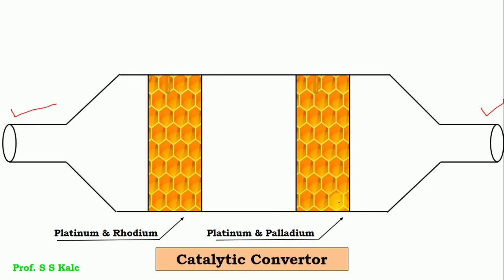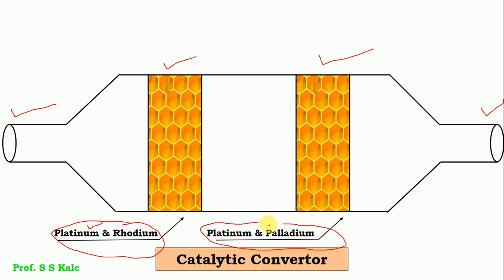Inside the pipeline there are two ceramic blocks, shown in yellow. Both have a honeycomb structure. In ceramic block number one, platinum and rhodium are pasted onto the honeycomb structure as a catalyst. In ceramic block number two, platinum and palladium are similarly pasted. Both blocks act as catalysts for reducing pollution.